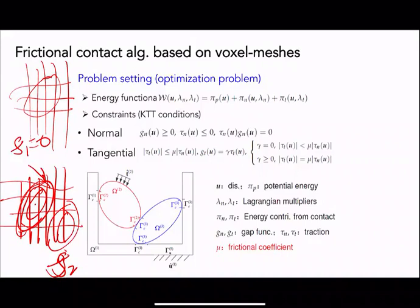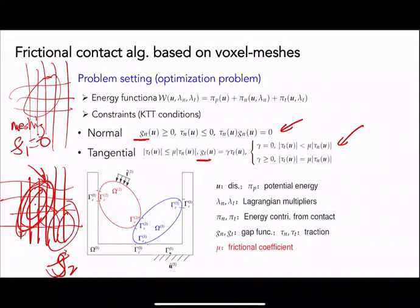The next question is to reconstruct the contact pair necessary for contact mechanics and apply the right constitutive law. The constitutive law we implement is the classic Mohr-Coulomb criterion: Gn is the normal gap function, Gt is the tangential gap function. We apply the Mohr-Coulomb criteria to limit the tangential tractions as a function of the frictional coefficient and normal tractions, where normal tractions in contact should be negative indicating contact.